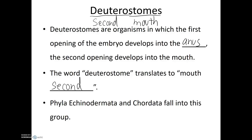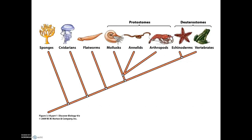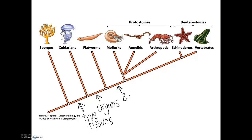Both protostomes and deuterostomes have body cavities. So to review: true tissues is what differentiates sponges from the rest of the animals; organs separates the cnidarians and sponges from the rest; and body cavities separates the flatworms, cnidarians, and sponges from the rest. Among animals with body cavities, we have two groups: the protostomes and the deuterostomes.